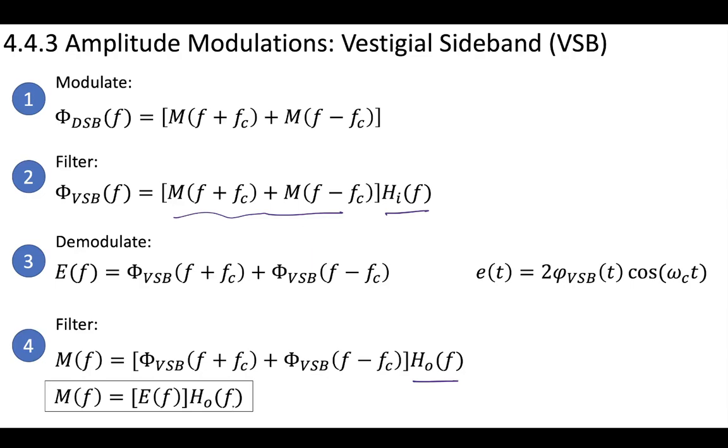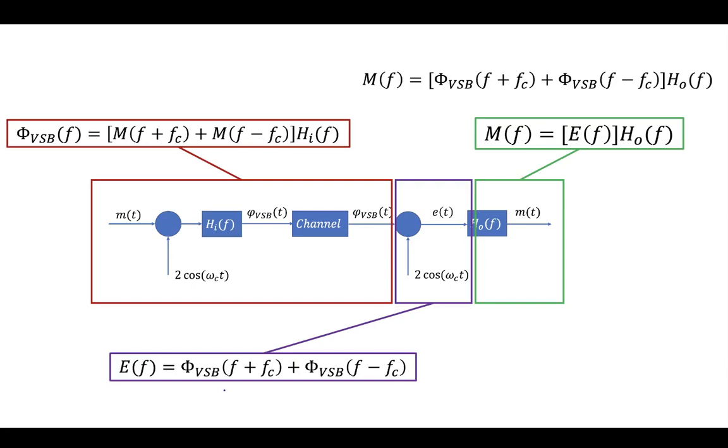So our final message is going to be this signal E multiplied by the output filter. So from a system perspective, we first have this part of the system which basically modulates our message, applies a bandpass filter, and passes it through a channel as the VSB signal.